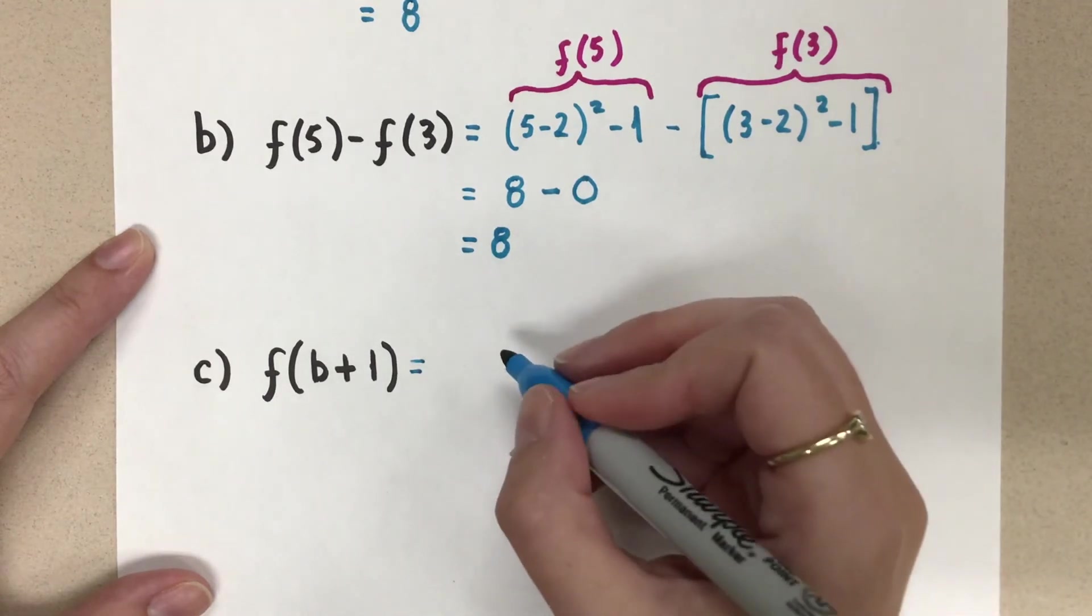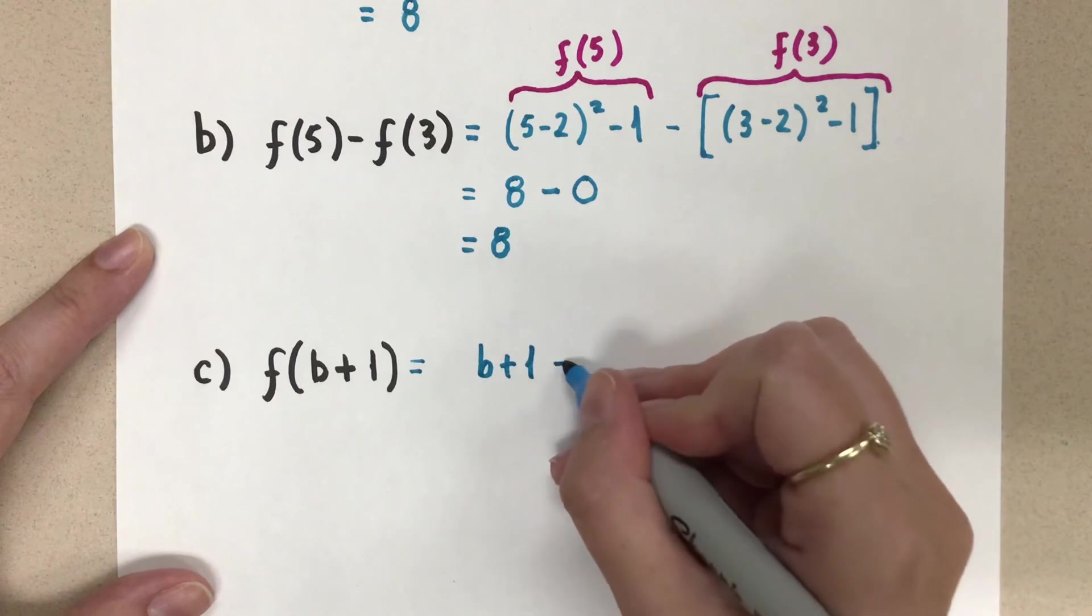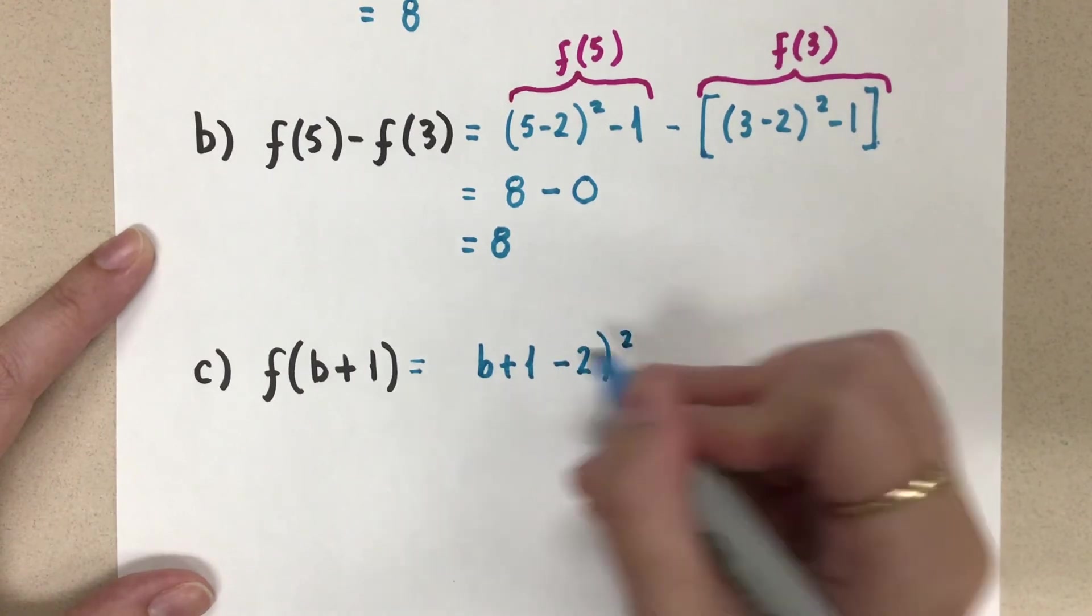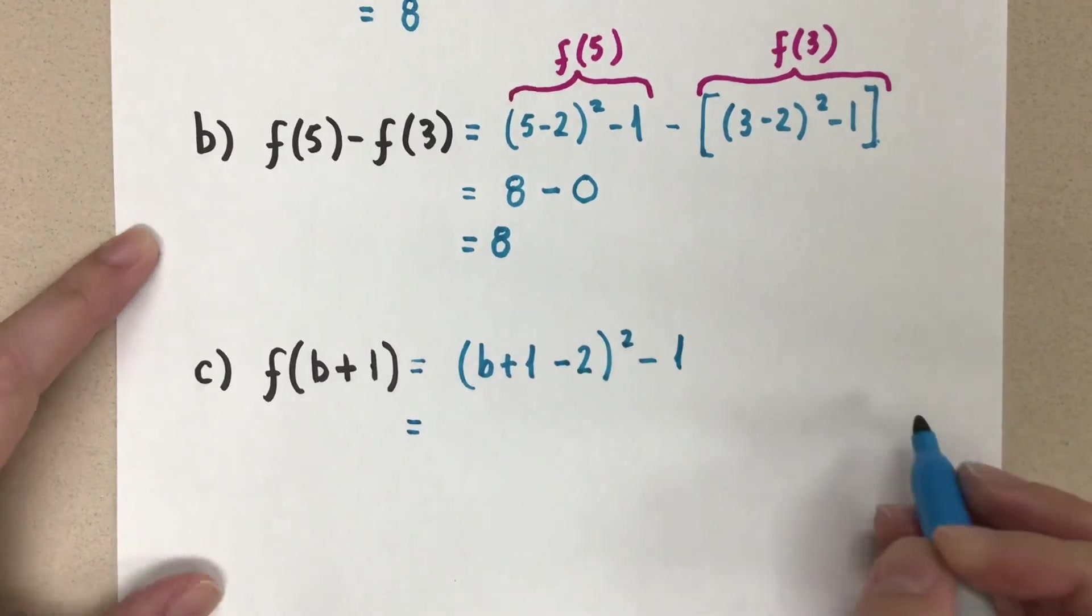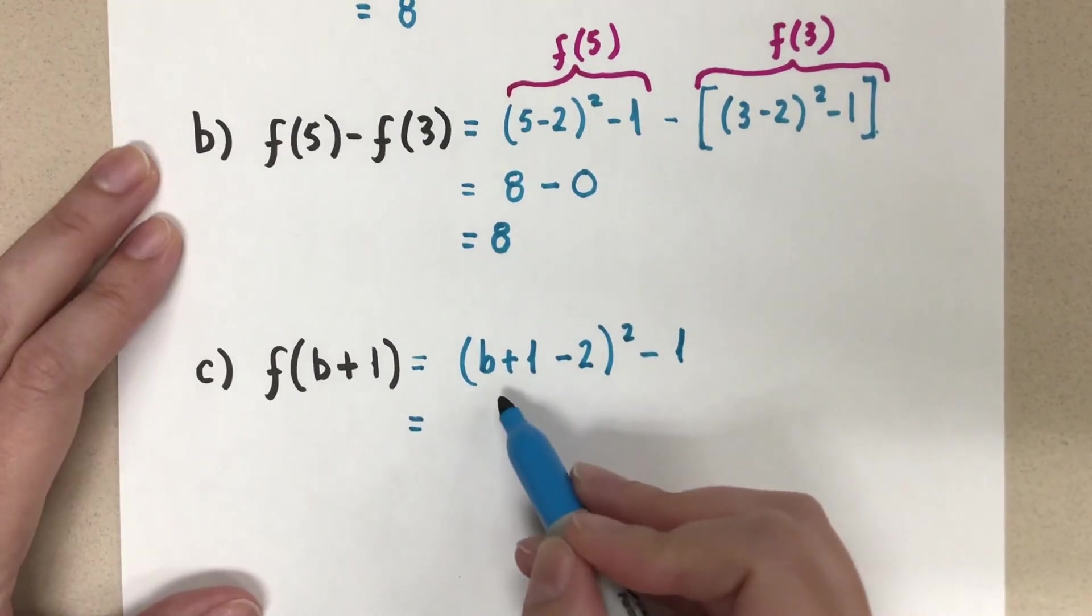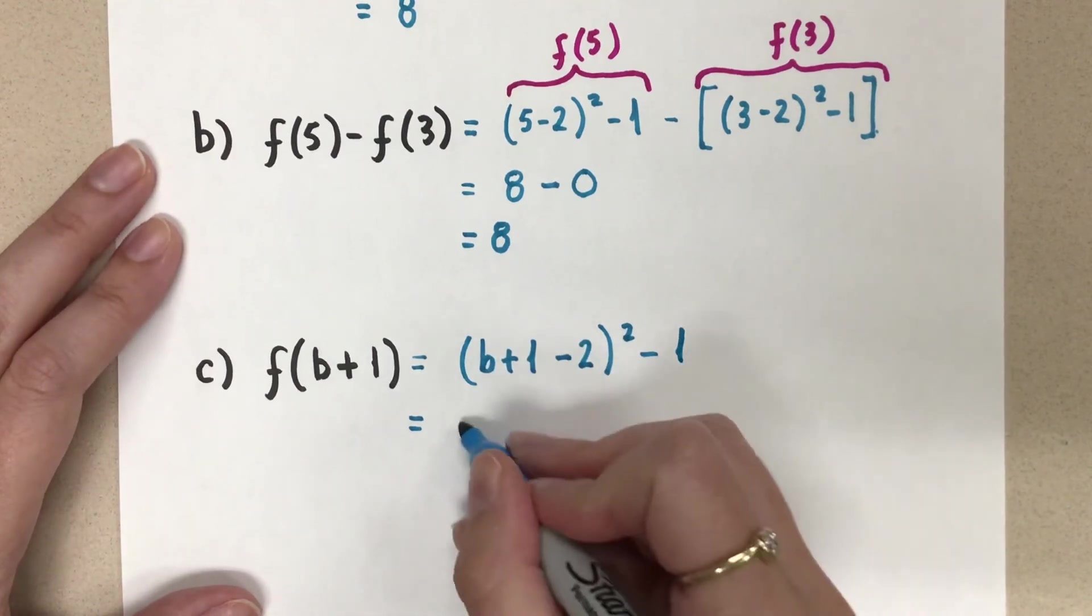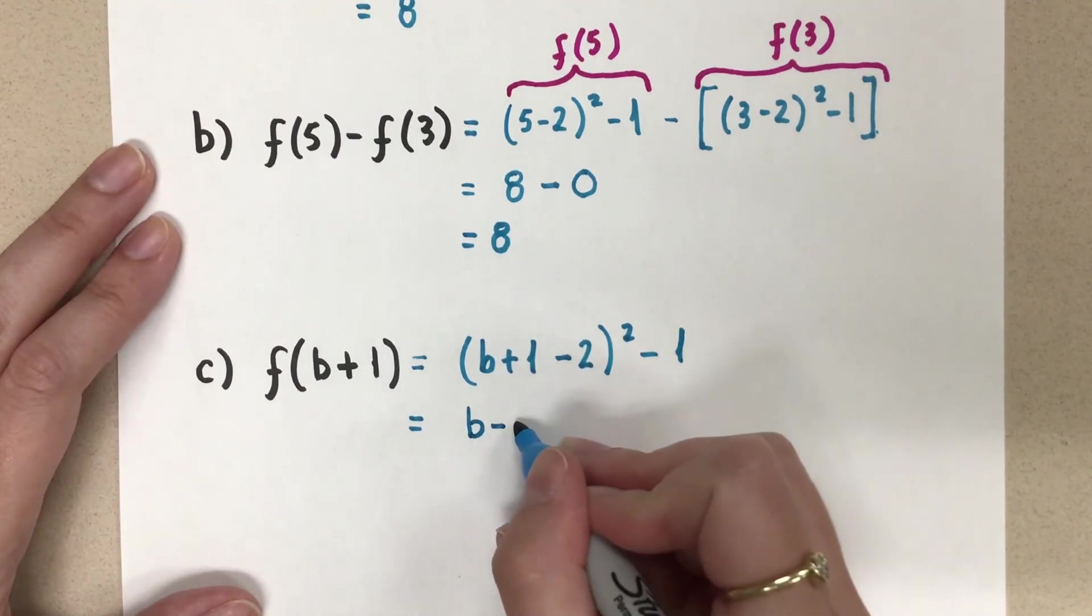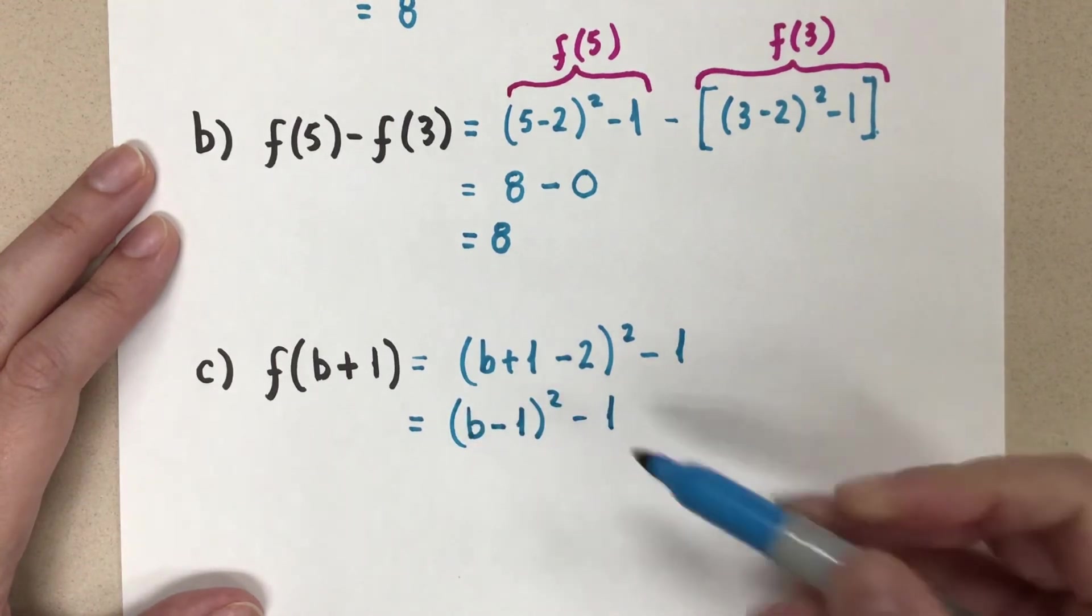All right. Let's plug it in. So I had the x, which now is b plus 1, and we had minus 2 squared, and then minus 1. Let's evaluate a little bit here. We want to simplify what we have. So the b plus 1 minus 2 in the brackets, I can simplify that to b minus 1 all squared, and then minus 1. I can leave this like this, or I can simplify further.